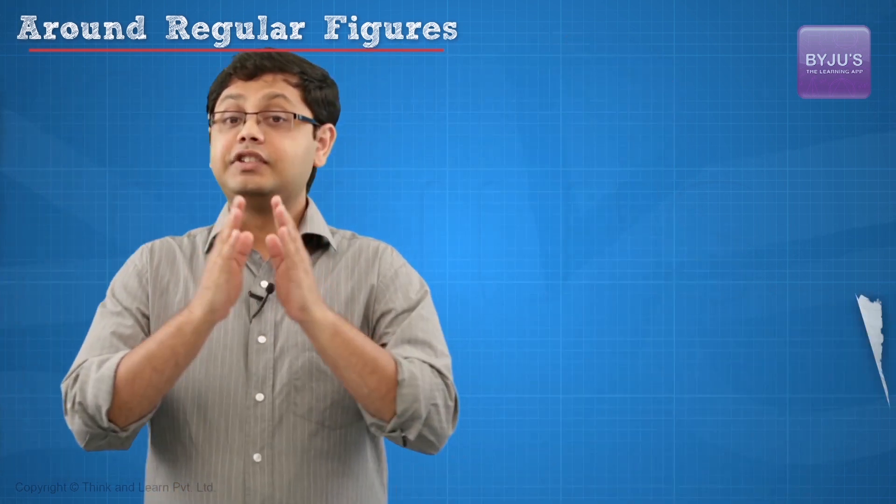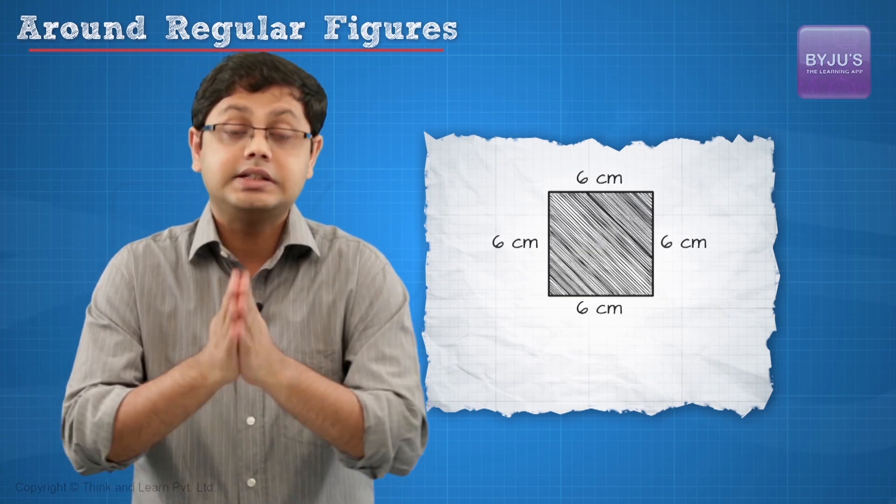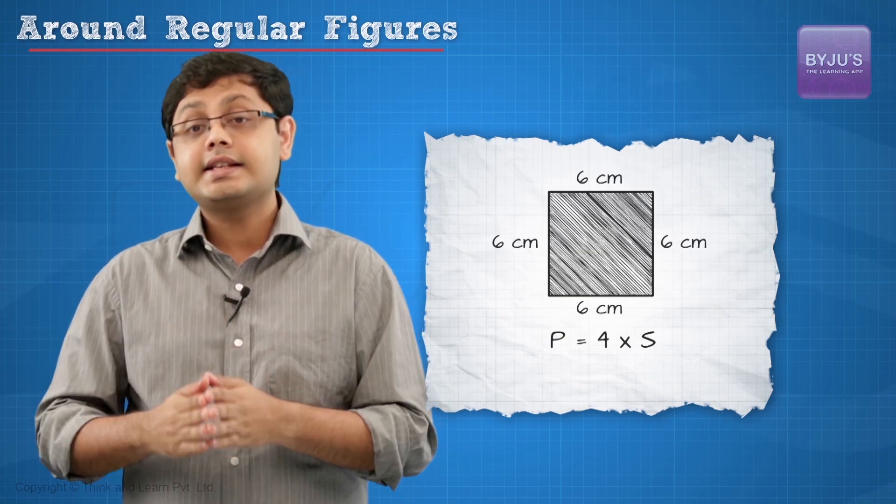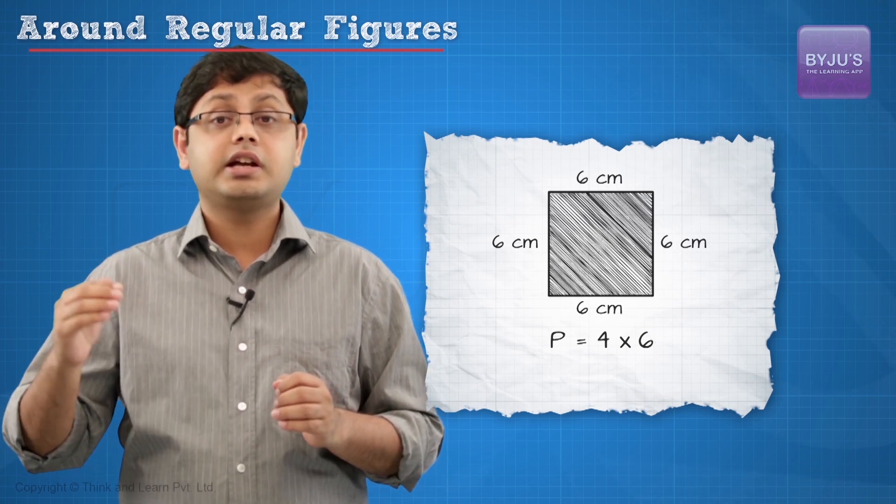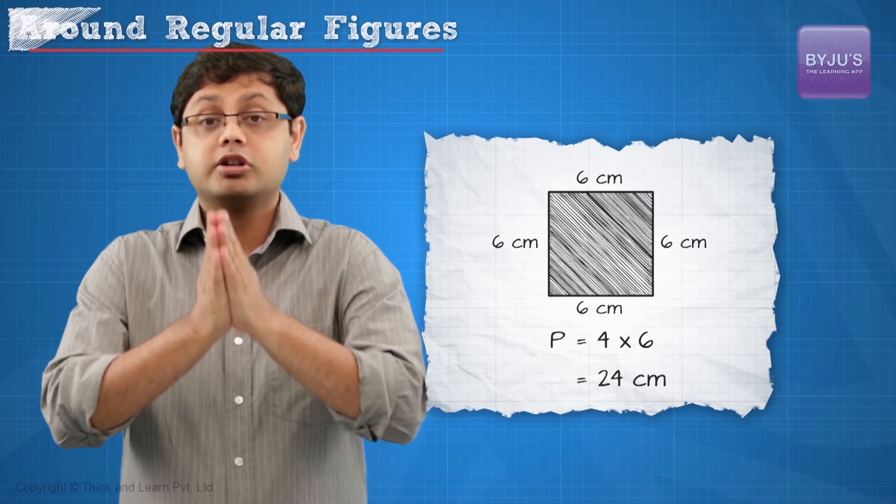So the formula for this is going to become 4 times side or I can write it as 4s in short. If the length of the side of the square is 6 centimeters, then in our formula, S is going to be 6 and the perimeter will be 4s or 4 times 6 or 24 centimeters.